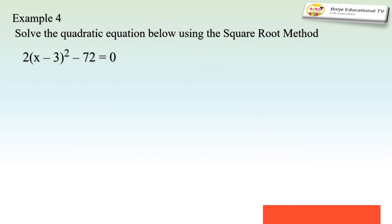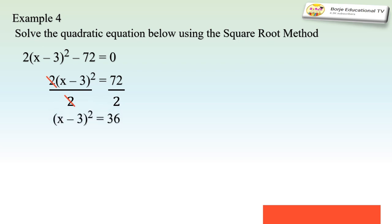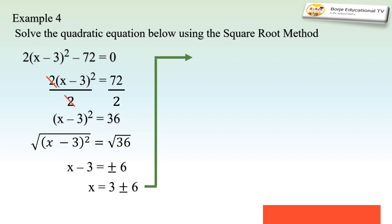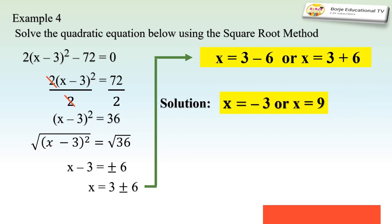For example 4, we have 2(x - 3)² - 72 = 0. First, we transpose -72 to the right side and divide both sides by 2. Simplifying gives (x - 3)² = 36. Applying the square root method, we extract roots from both sides: x - 3 = ±6. Combining like terms: x = 3 ± 6. This gives us x = 3 - 6 = -3 or x = 3 + 6 = 9.